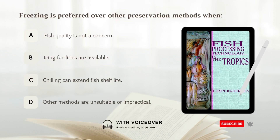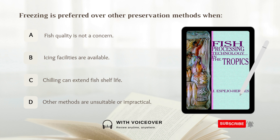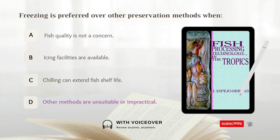Freezing is preferred over other preservation methods when: A. Fish quality is not a concern. B. Icing facilities are available. C. Chilling can extend fish shelf life. D. Other methods are unsuitable or impractical. Answer: D. Other methods are unsuitable or impractical.